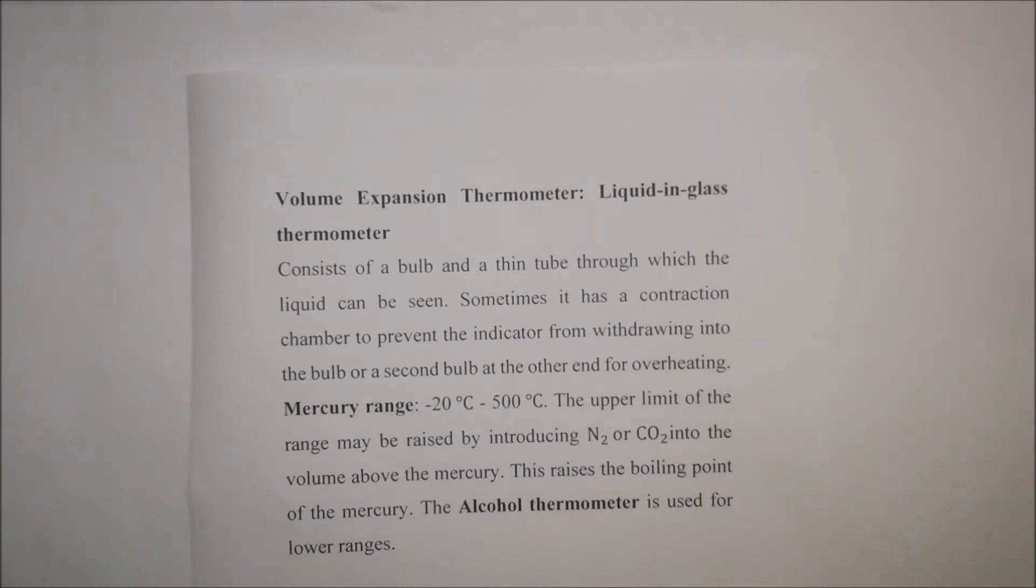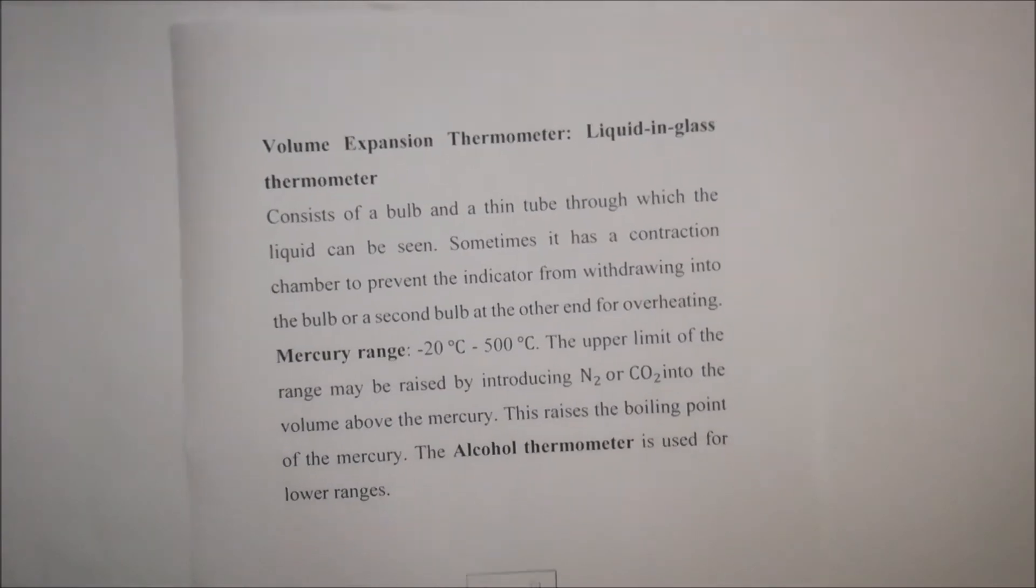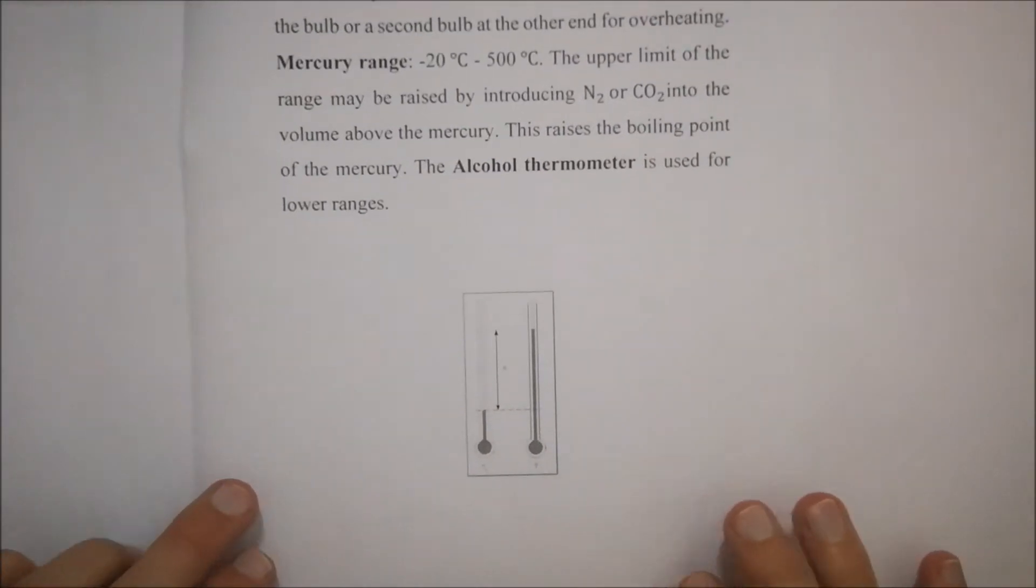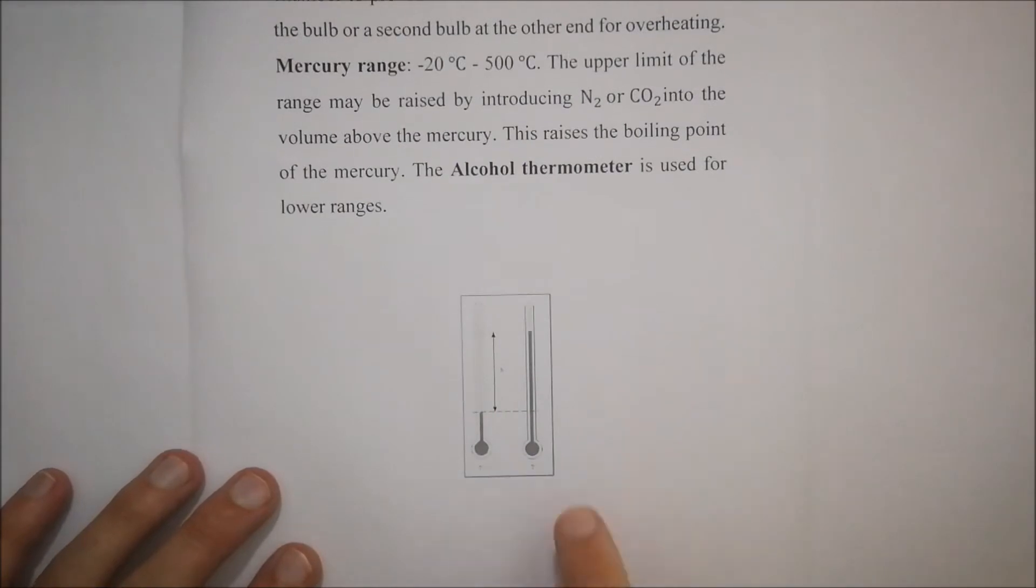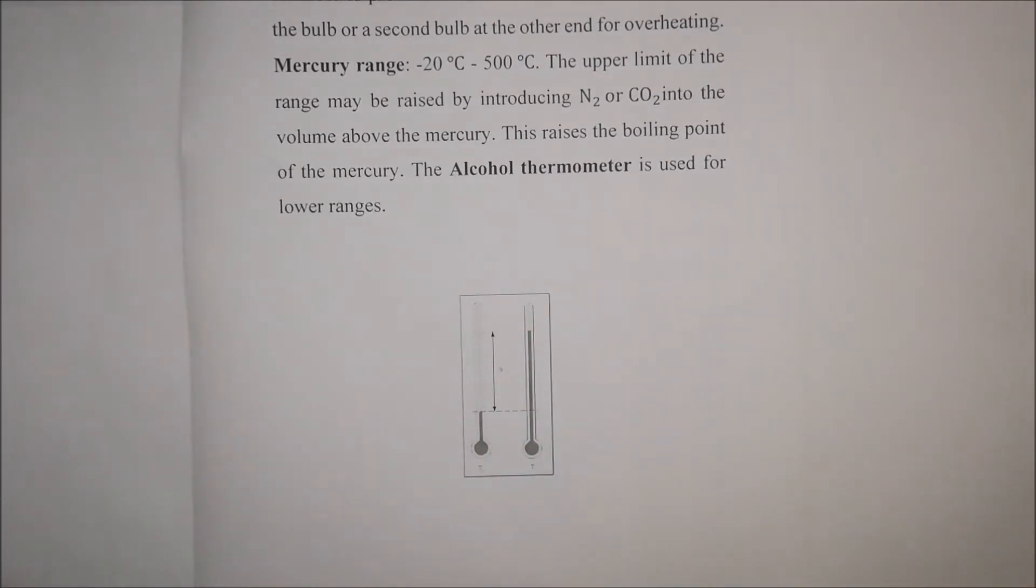The upper limit of the range may be raised by introducing either nitrogen or carbon dioxide into the volume above the mercury. This raises the boiling point of the mercury and the alcohol thermometer is used for lower ranges. You'll see a diagram of this typical bulb type of thermometer. The bulb at the bottom, and then you're able to see the liquid expanding as temperature increases and therefore you're able to know what temperature is.